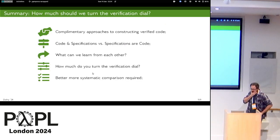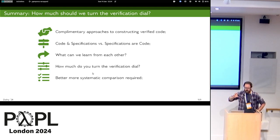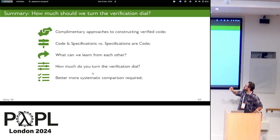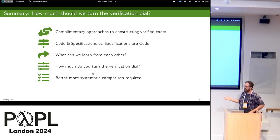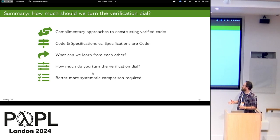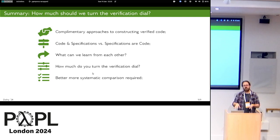To finish: I think Idris and Daphne are complementary approaches. The key thing is that verification dial — how do you turn it, and to what level? I like specifications as code, but maybe you want the separation of a more intrinsic approach. I'm not trying to say Daphne is bad — I'm trying to say what can we learn from each other and how can we develop these tools to capture that middle ground. Our work is very unsystematic and I'd like to do a more systematic comparison to work out where the real differences are and learn from that.